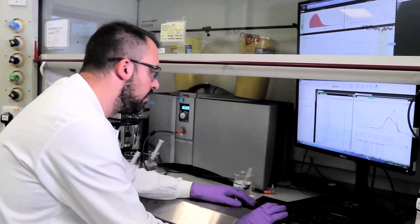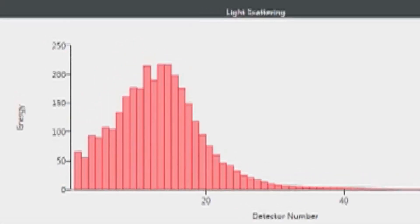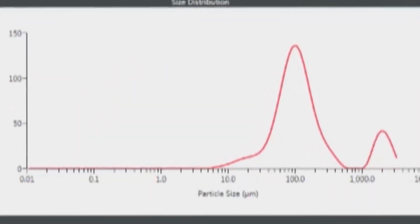Once developed, our processes can be transferred with the aid of modeling to our production sites in Devons where GMP material can be produced in kilogram quantities.